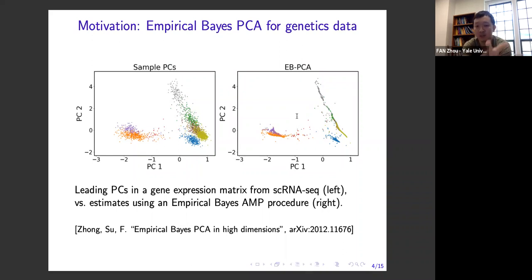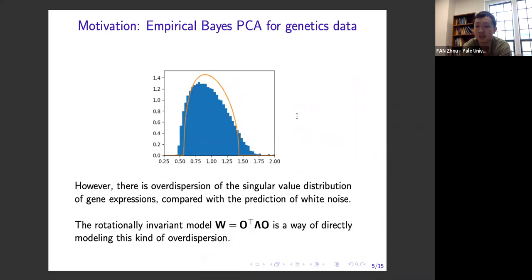What we were trying to do was to combine AMP with classical empirical Bayesian statistical ideas to estimate an underlying prior distribution for these principal components, and then apply Bayes AMP to denoise using this prior. The version of AMP we applied assumed IID Gaussian entries for the noise. But it became clear that in this application, that assumption is not exactly correct — a symptom being that a histogram of singular values shows wider spread or over-dispersion compared to what white noise would predict.